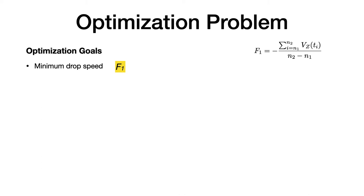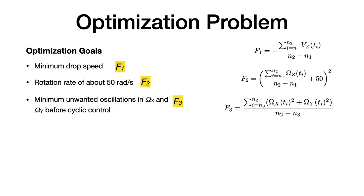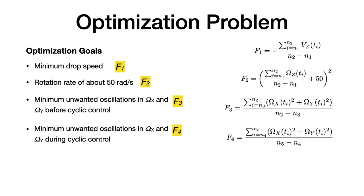Thirdly, we want to achieve the minimum unwanted oscillations in omega x and y before cyclic control is applied. This is denoted by function 3. Unstable platforms result in growing oscillations in omega x and omega y. Next, minimum unwanted oscillations in omega x and y during cyclic control. Again, this ensures that the platform is stable as it moves under cyclic control.